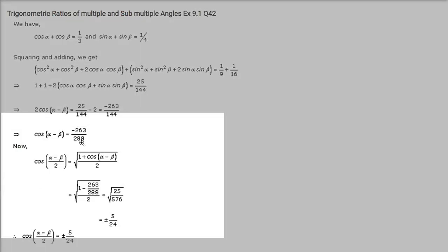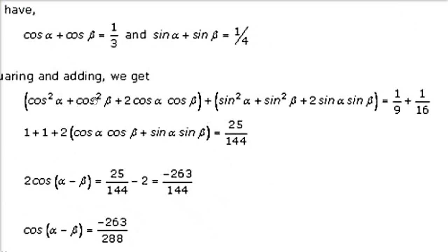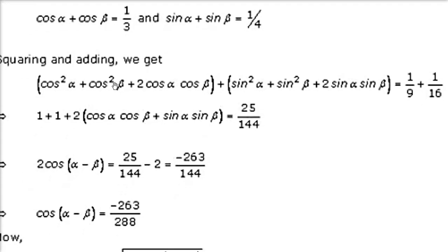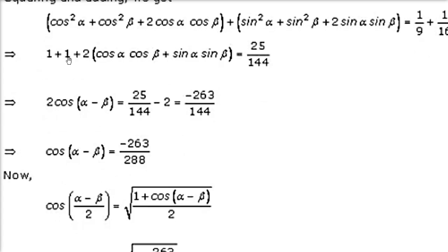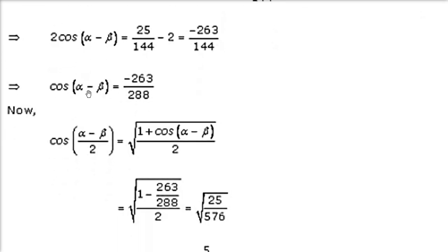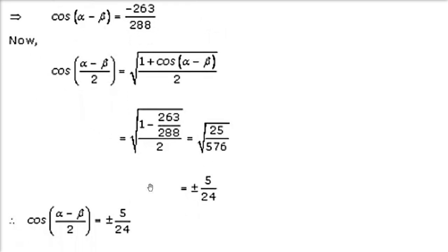Now we have cos α + cos β = 1/3 and sin α + sin β = 1/4. Square both and add: cos²α + sin²α = 1, cos²β + sin²β = 1, plus 2(cosα cosβ + sinα sinβ) = 2cos(α−β). So 1/9 + 1/16 = 2 + 2cos(α−β), giving 25/144 − 2 = 2cos(α−β). Then cos((α−β)/2) = √[(1 + cos(α−β))/2] = ±5/24.